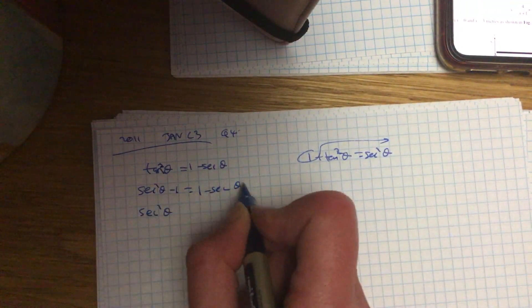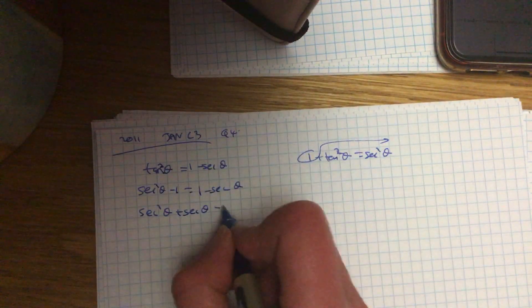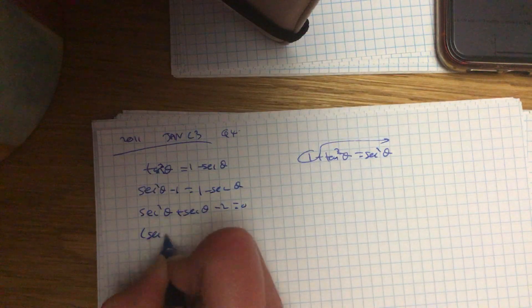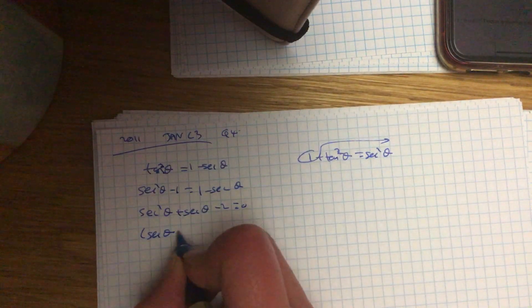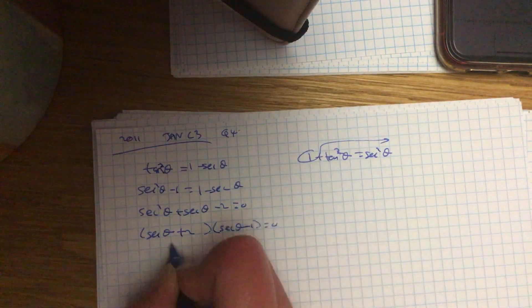It's quadratic, so put everything on one side. Bring that over, it becomes a plus. Bring that over, it becomes a minus. This factorizes out, so it's sec add 2 and sec theta minus 1 equals 0.